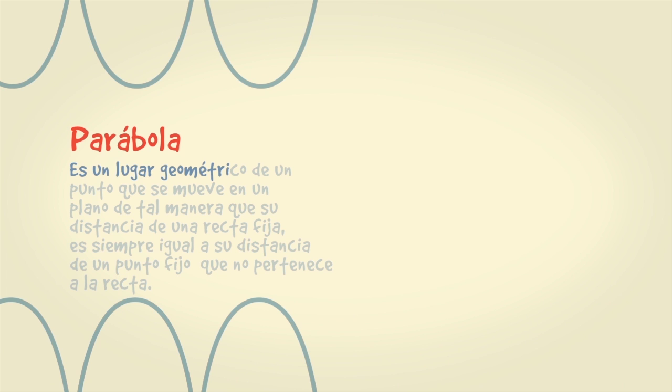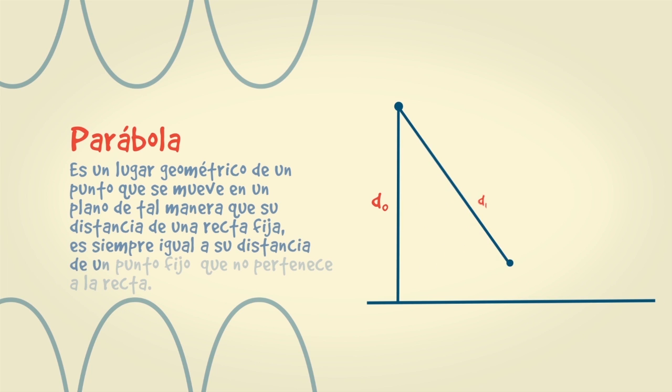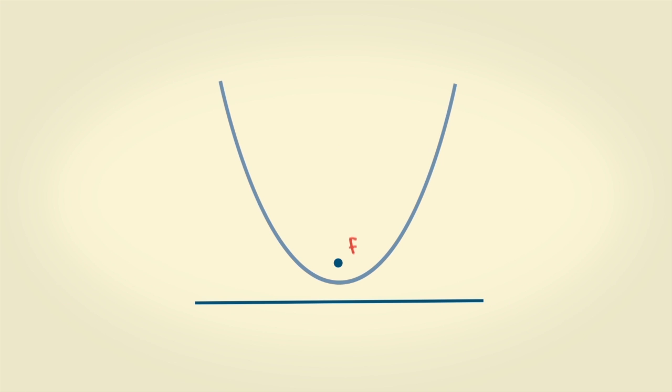La parábola es un lugar geométrico de un punto que se mueve en un plano de tal manera que su distancia de una recta fija es siempre igual a su distancia de un punto fijo que no pertenece a la recta.